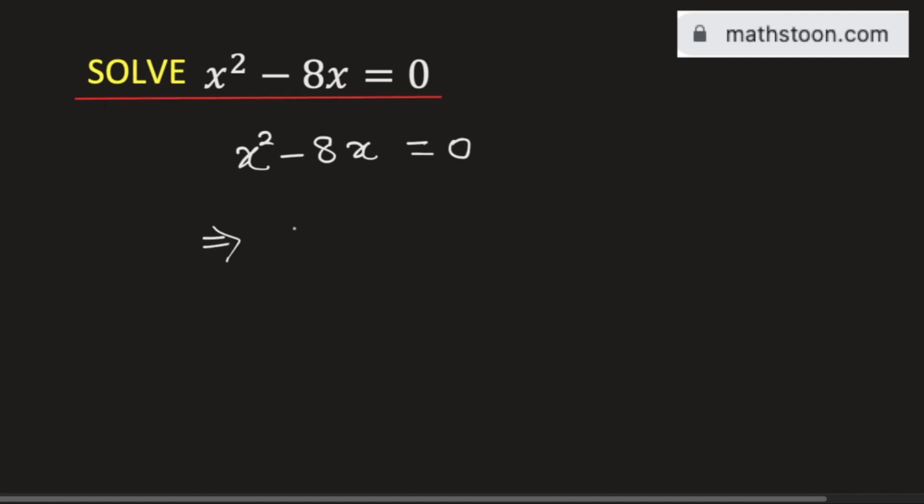See that we can take x as a factor. Then from the first term we will get x and from the last term we will get negative 8. And this is equal to 0.